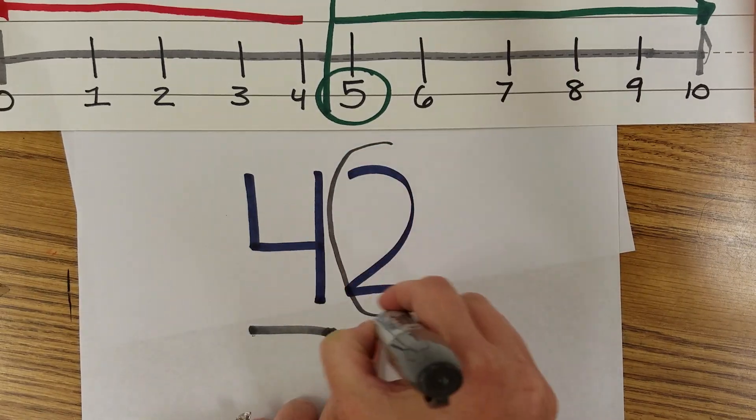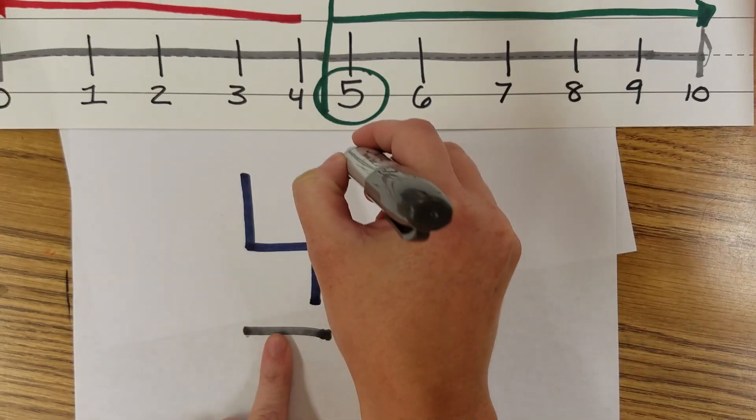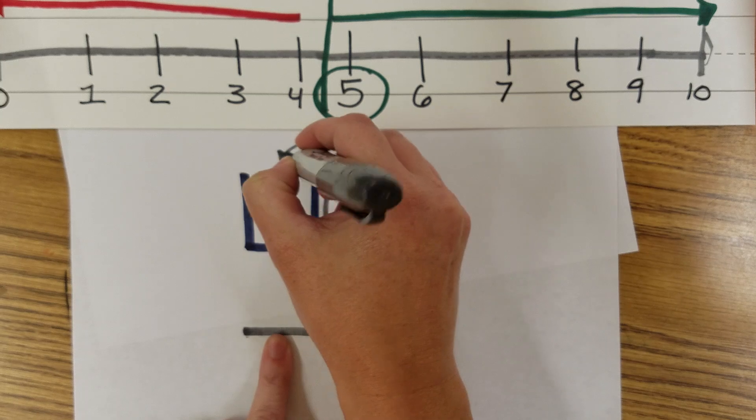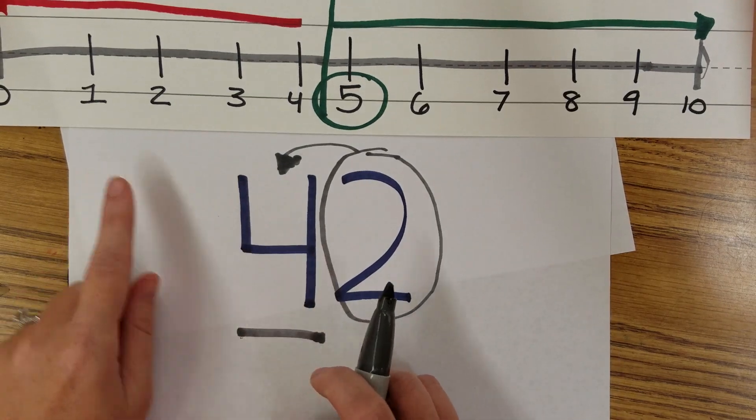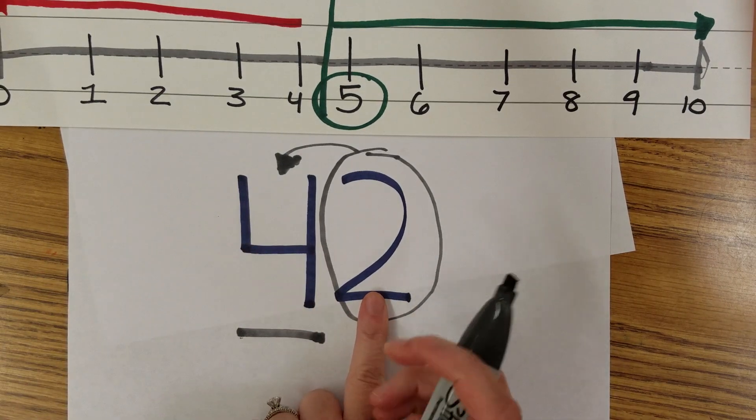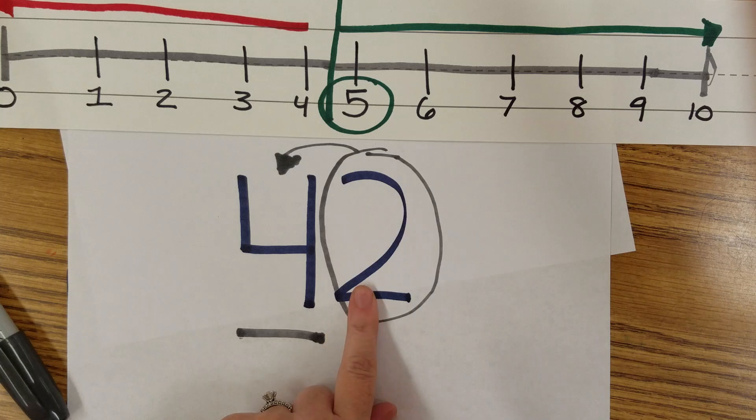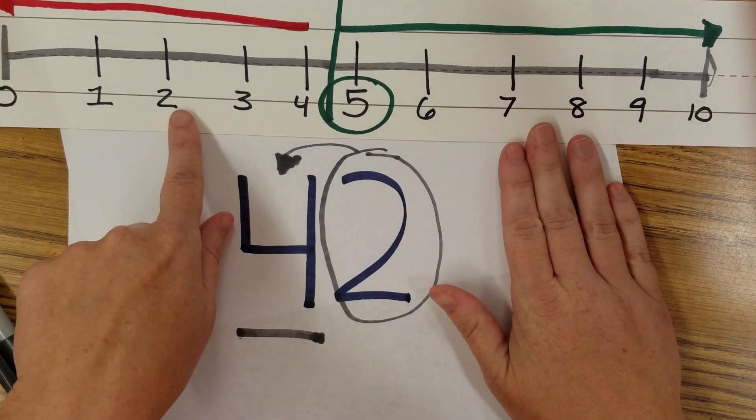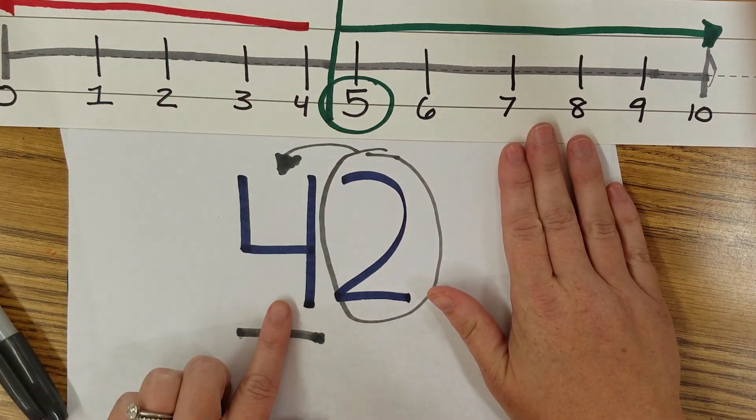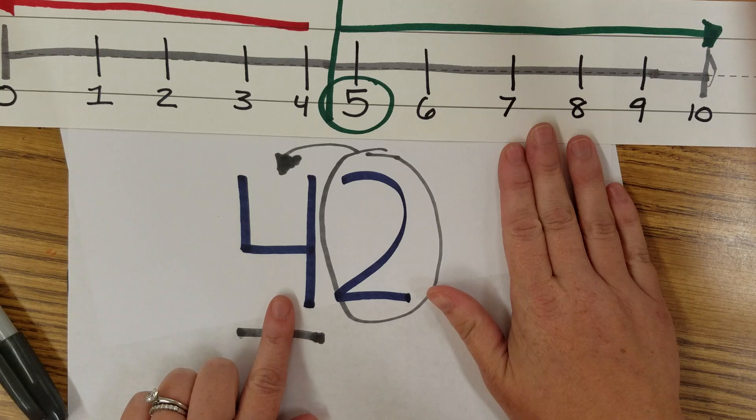This number is the boss of this number and it's going to tell it what to do. So if whatever number is in the ones place value, if it's zero, one, two, three, or four, it's going to tell it to stay at four.